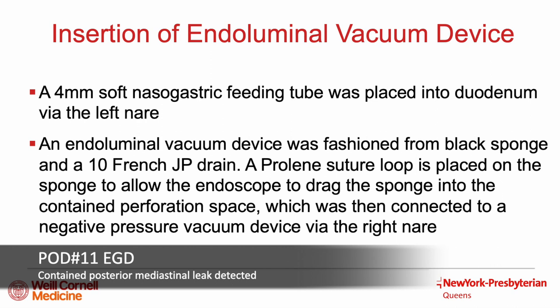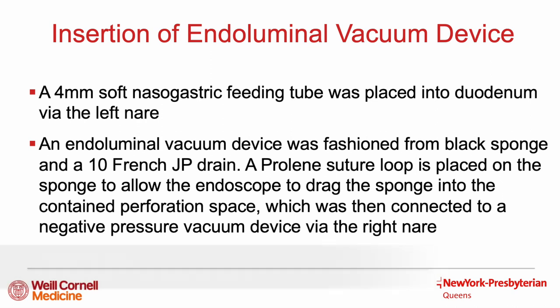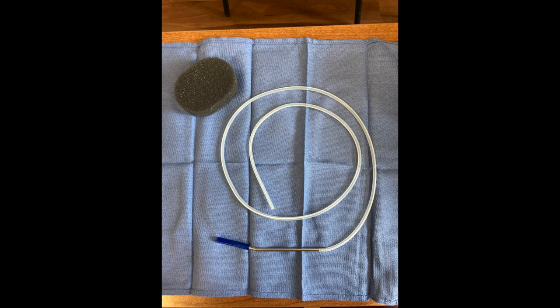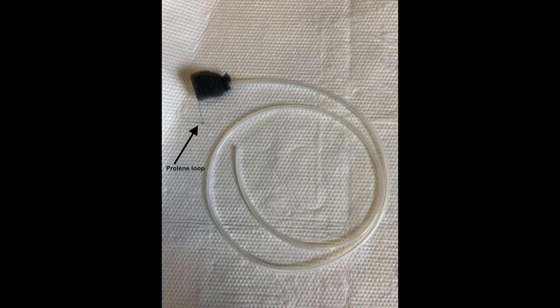Due to the patient's hemodynamic stability and contained mediastinal anastomotic leak, the decision was made to manage the patient conservatively with endoluminal vacuum therapy and nasal postpyloric feeding. A 4mm soft nasogastric feeding tube was placed endoscopically into the duodenum. While there are prefabricated commercial endoluminal vacuum devices available, these devices are also easily constructed from materials already found on hand in most operating rooms. We constructed our device from a black sponge and a 10 French round JP drain. A proline suture loop is placed on the end of the sponge to allow it to be directed via the endoscope into the leak cavity. This device was brought out through the right nare and connected to a negative pressure vacuum device.